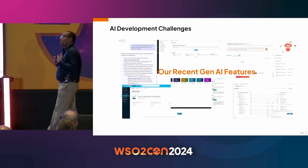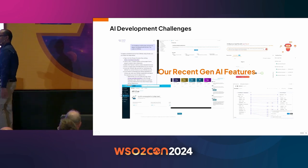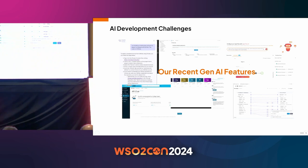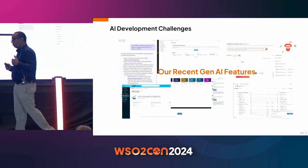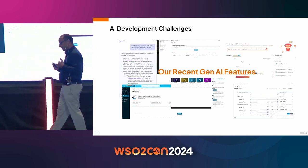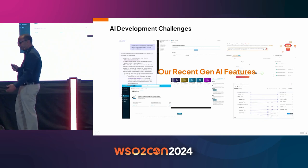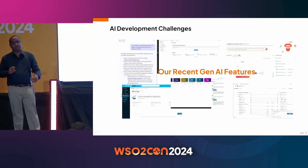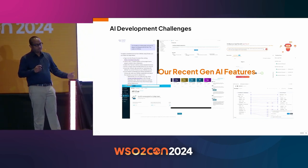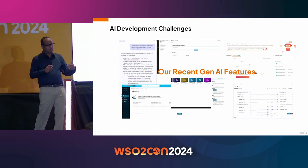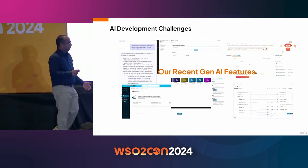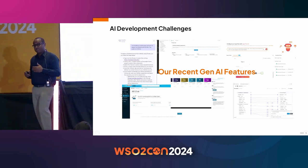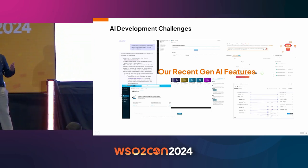Choreo Copilot lets you talk to Choreo in natural language. You can ask questions, learn about Choreo concepts, test your APIs, and we have also integrated runtime data to some level — so you can ask things like what is the latency breakdown for an API.